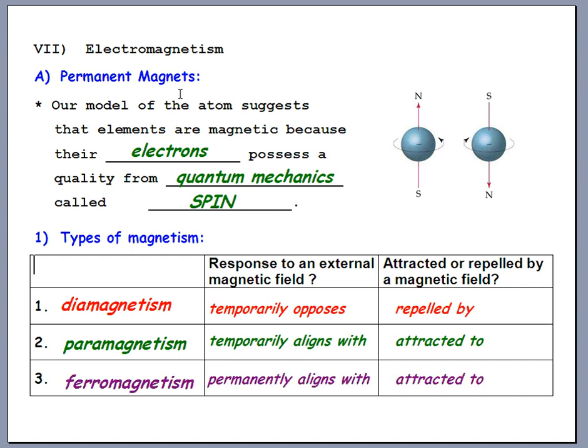Both diamagnetism and paramagnetism are small and temporary effects that aren't very interesting for us. What we want to look at is ferromagnetism. When you take a ferromagnetic material and expose it to a magnetic field, it creates a very strong magnetic field that aligns with the external field. Importantly, it's permanent — it retains that magnetic field once you take it away from the magnetizing source.